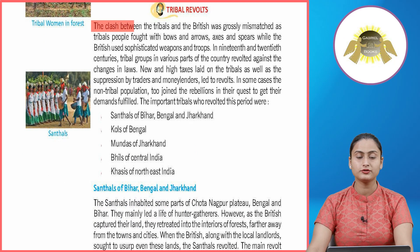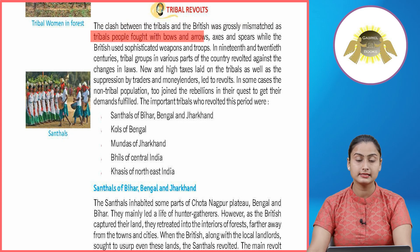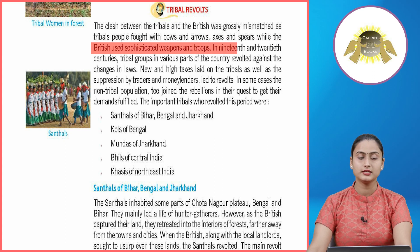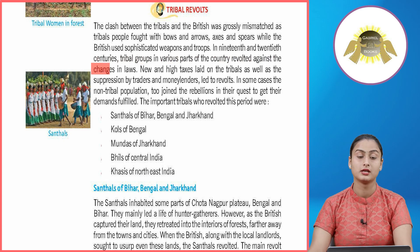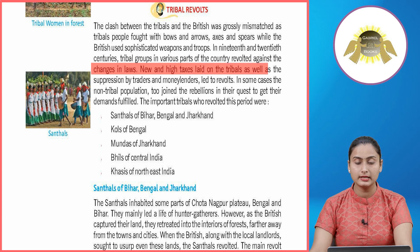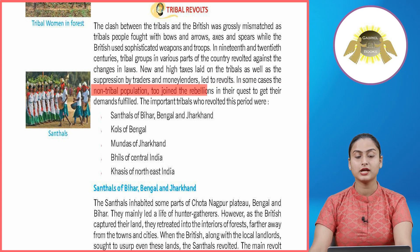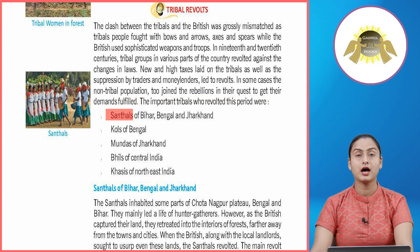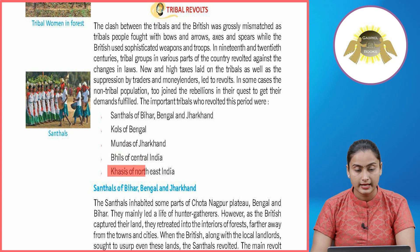Tribal revolts: the clash between tribals and the British was grossly mismatched, as tribal people fought with bows, arrows, axes, and spears while the British used sophisticated weapons and troops. In the 19th and 20th centuries, tribal groups in various parts of the country revolted against changes in laws, new and high taxes, and suppression by traders and moneylenders. In some cases the non-tribal population too joined the rebellions. The important tribal groups who revolted included the Santals of Bengal and Jharkhand, Coles of Bengal, Mundas of Jharkhand, Bhils of central India, and Khasis of north-east India.